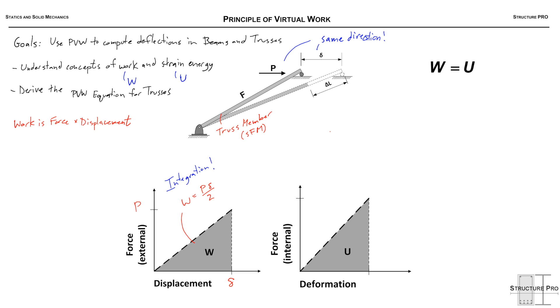The formula looks different if you're applying a moment to create an angle change. So generally the work expression is P times delta, but it could be M times some angle theta. The important thing to remember is that a point load tries to displace a structure in X or Y, and a moment at a location tries to create an angle change.